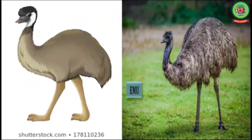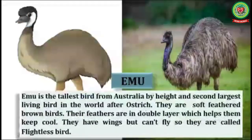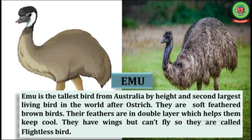Number three is emu. The emu is the tallest bird from Australia by height and the second largest living bird in the world after the ostrich. They are soft-feathered brown birds. The feathers are in a double layer which helps them keep cool. They have wings but can't fly, so they are called flightless birds.